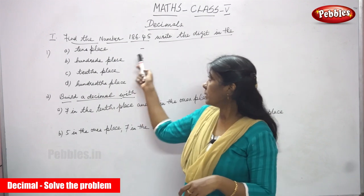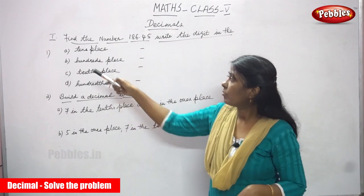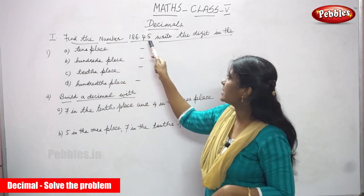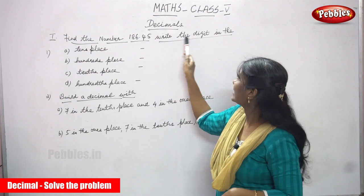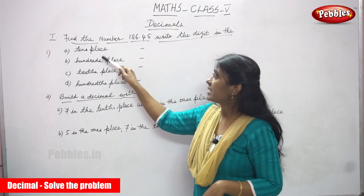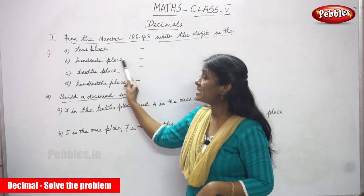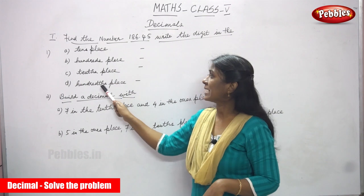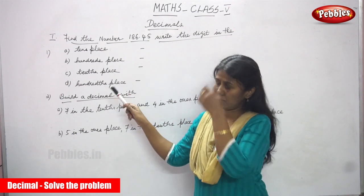Okay, now we are going to solve the problems. First one: find the number 186.45, write the digit in the tens place, hundreds place, tens place, hundreds place.